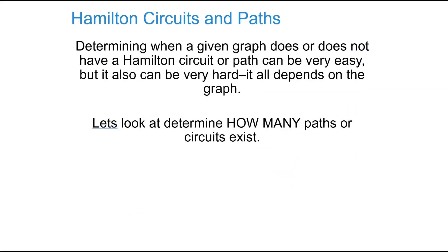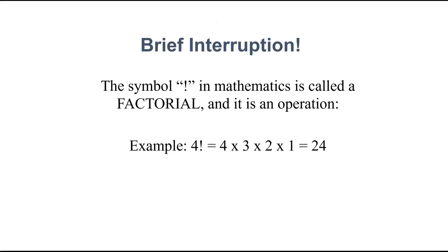Determining when a given graph does or does not have a circuit can be pretty easy, but it can also be hard. So let's start with how many. So we're just going to pause here. There's this symbol here. It looks like an exclamation point, but it's actually a factorial. And what it means is when you take something factorial, you multiply it by every number that comes after it. So 4 factorial is 24, 3 factorial is 6.